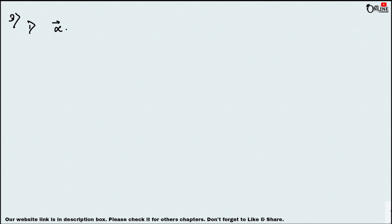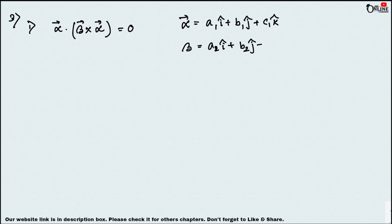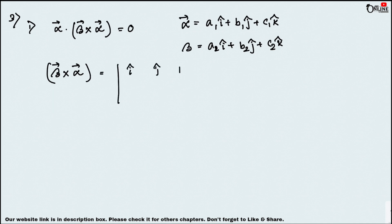Sum number three: prove that α·(β×α) = 0 for any vectors α and β. Let α = a1·i + b1·j + c1·k and β = a2·i + b2·j + c2·k. First find β×α by writing the determinant with i, j, k in the first row, then coefficients a1, b1, c1 and a2, b2, c2.